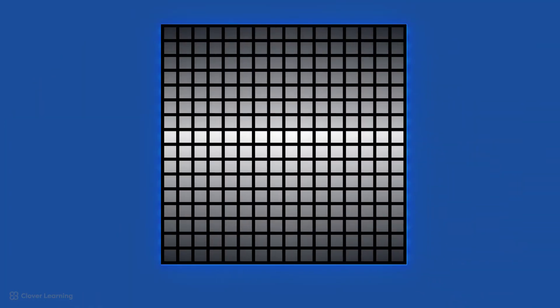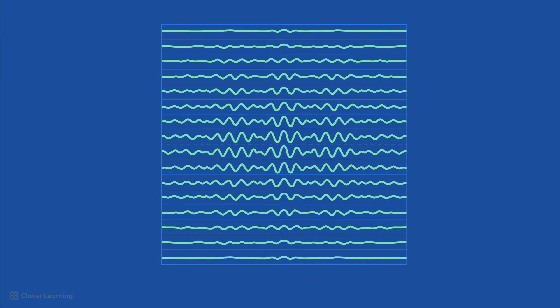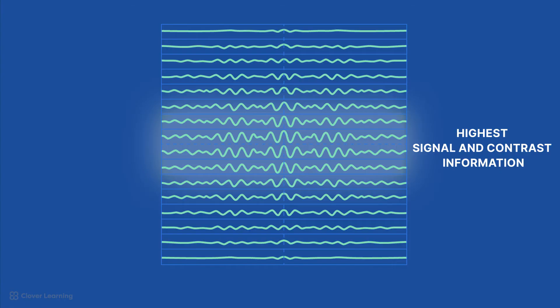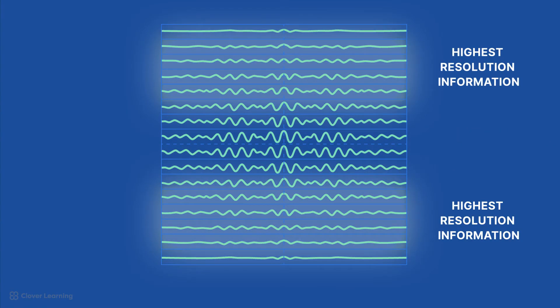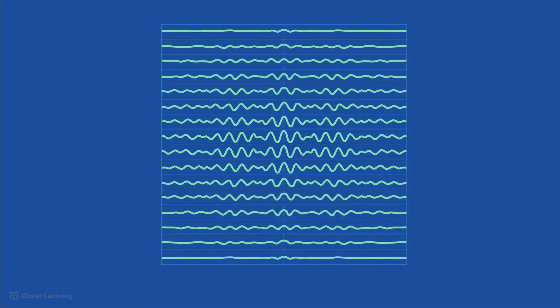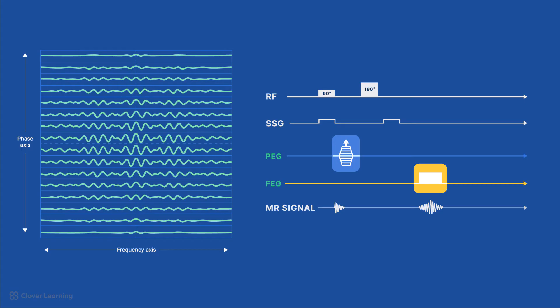The data are arranged in a matrix with the highest concentration of signal and contrast information located at the center of the matrix, and the highest resolution data at the outside edges. K-space has two axes: the phase axis and the frequency axis. These axes correspond to the phase and frequency information from the scanner.